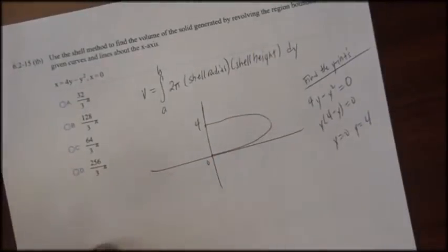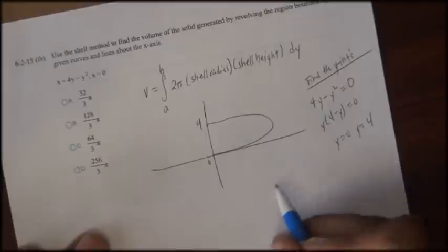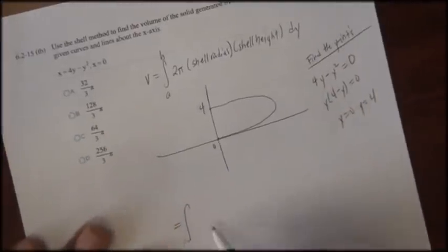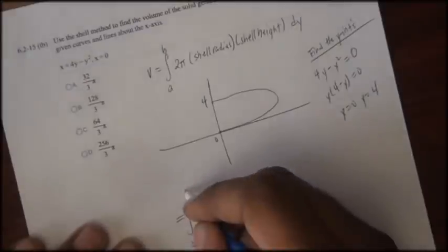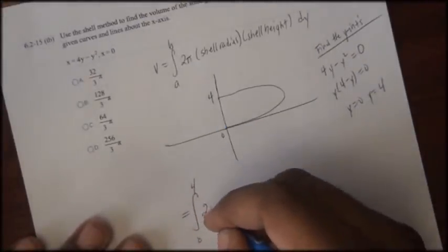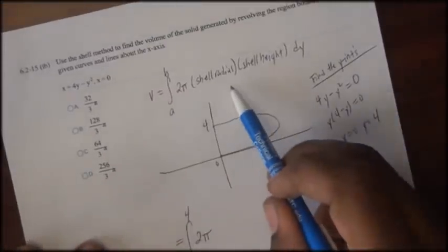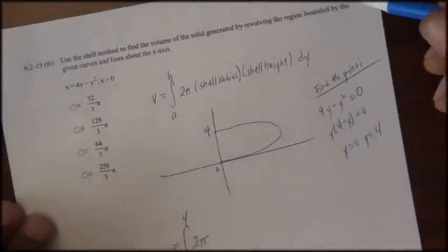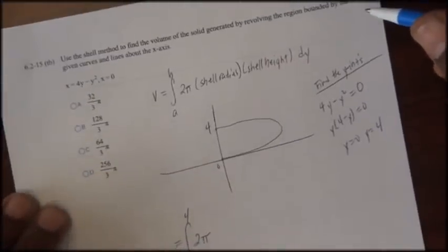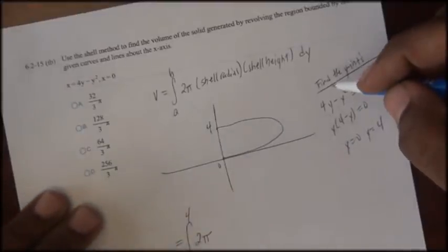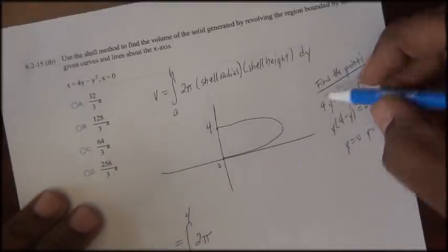So we're going to set up the formula for the shell method. We have that the volume is equal to the integral from 0 to 4 of 2π times the shell's radius times the shell's height.